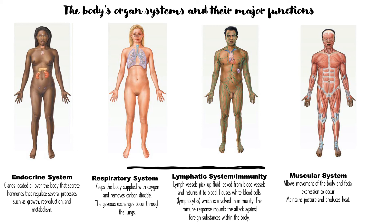The immune system is important for mounting an attack against any foreign substances within the body. The muscular system focuses mainly on skeletal muscles — the muscles attached to bones. It allows movement and facial expression, helps maintain posture, and produces heat. When you're cold and shivering, your skeletal muscles contract to generate heat.